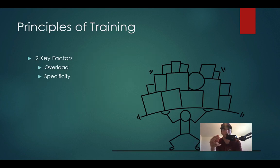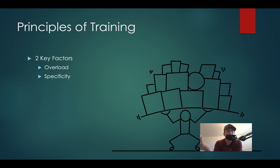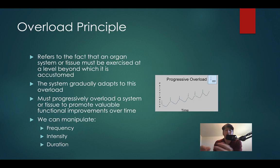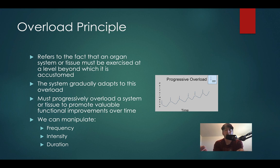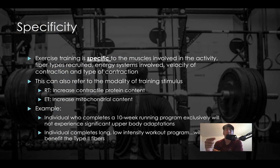To talk about training, we need to discuss two key principles. These apply to both resistance training and endurance training. We have overload and we have specificity. Overload essentially means we have to progressively add difficulty, intensity, or levels beyond what we're accustomed to. For running, that's running faster, further, or longer. For resistance training, it's adding more weight, reps, or sets. We can manipulate this with frequency, intensity, and duration.